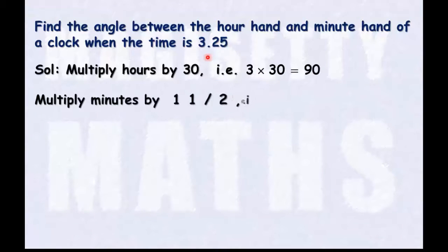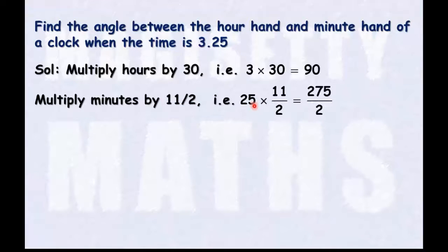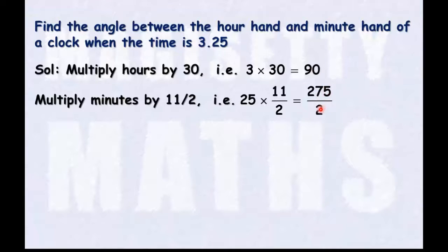And, multiplying the minutes by 11/2. That is, multiplying 25 minutes by the fraction 11/2, we get 275 divided by 2. So here we get 2 results: 90 and 275/2.